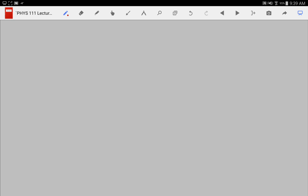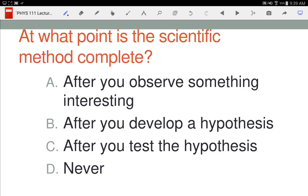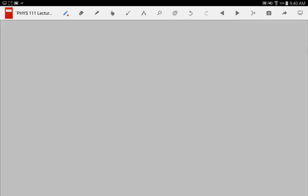All right, our first clicker question. At what point is the scientific method complete? Are there three people without clickers? Who doesn't have a clicker? Okay, so the answers we got were—thankfully, that's a good sign. That means that actually everybody was listening or already knew. Many times I get to this question and the answers are all over the board. Thank you for listening.